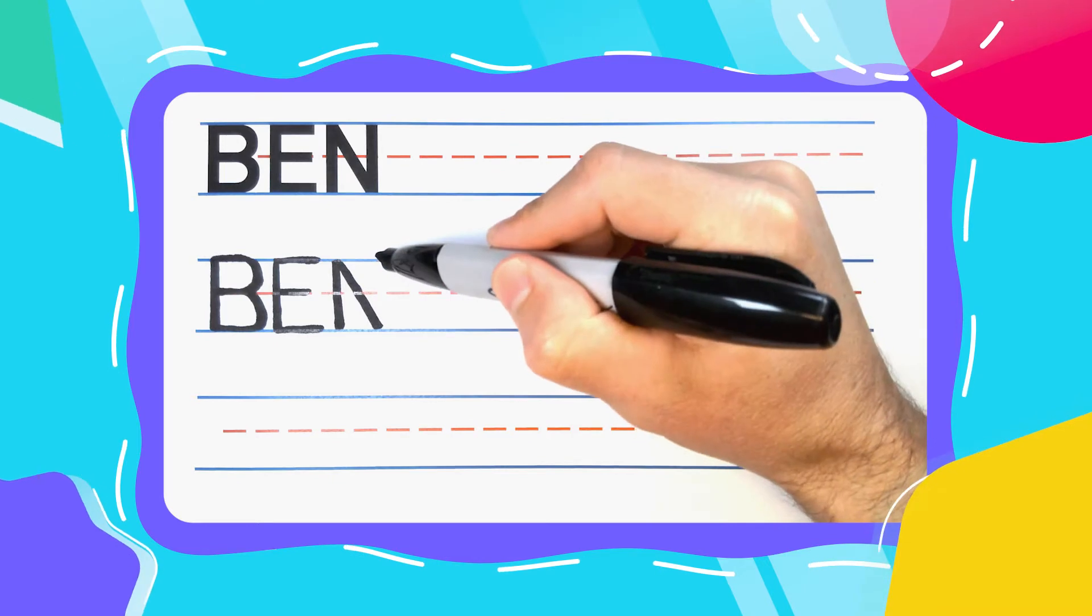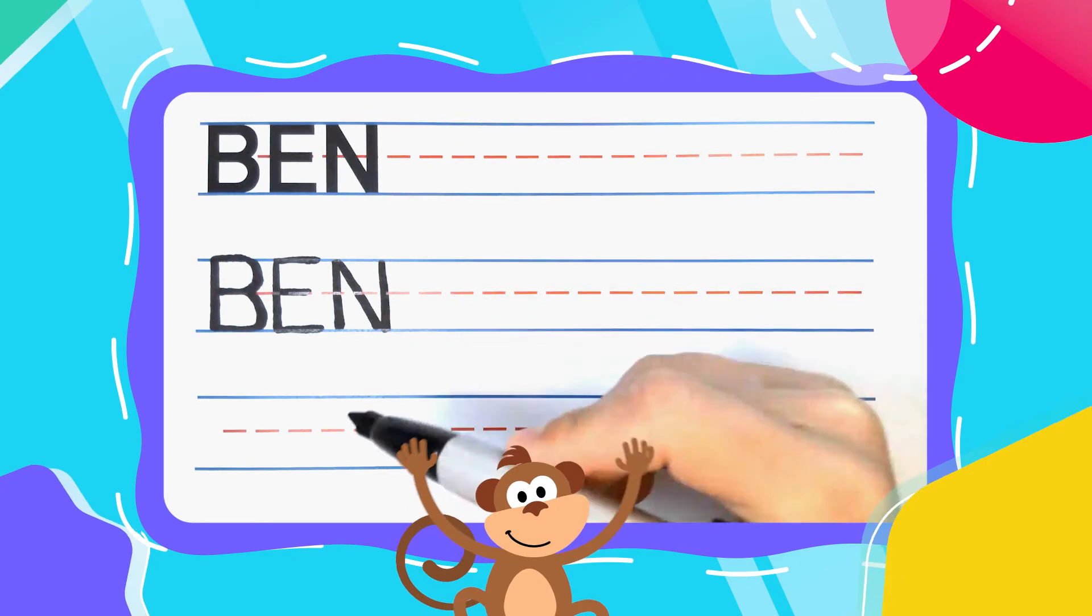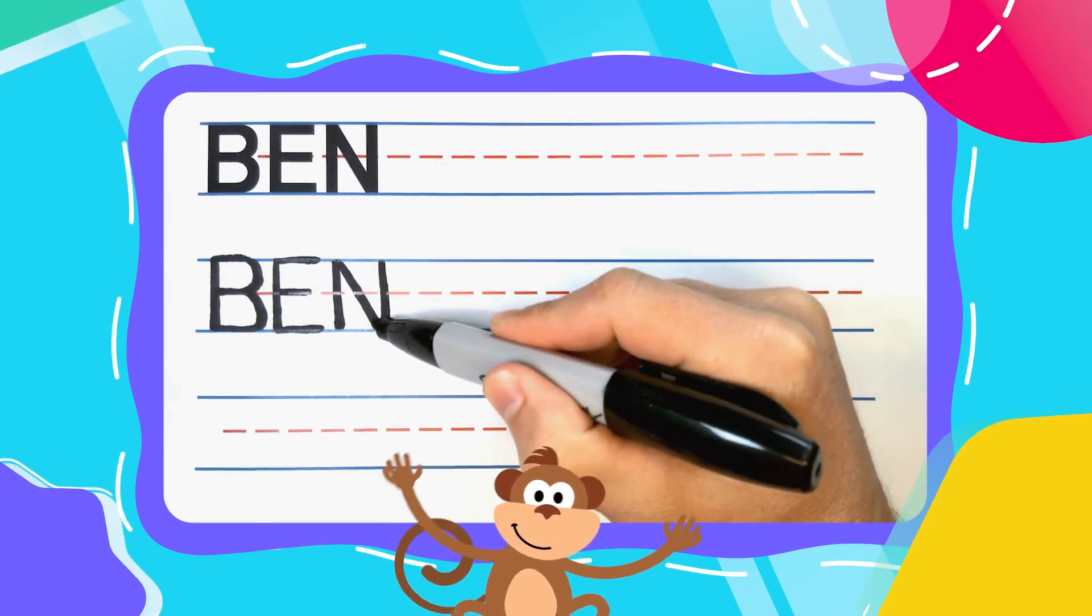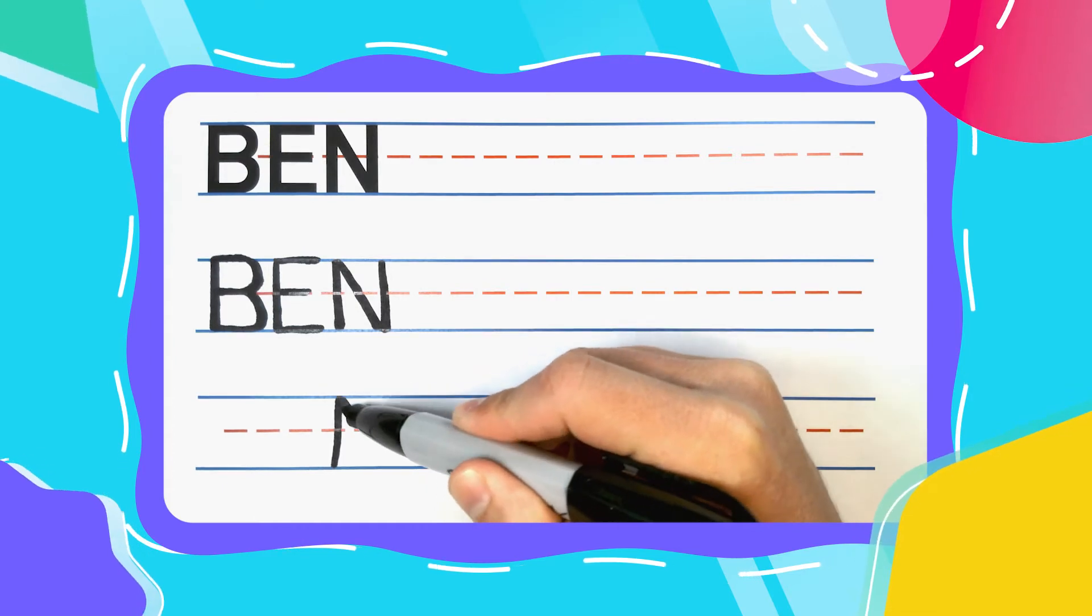bottom, come back up to the top, and finish your N with a straight line down. You can also do Ns what I like to call wild style, where you never take your pen up off the paper: straight up,